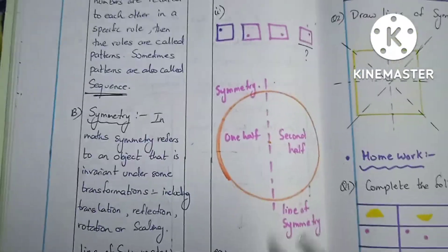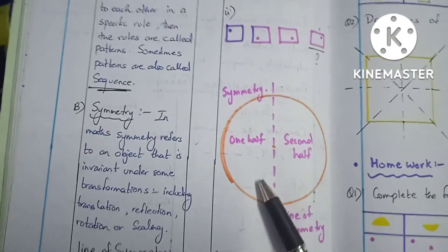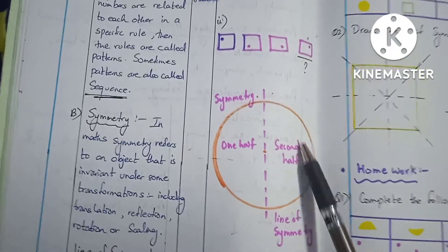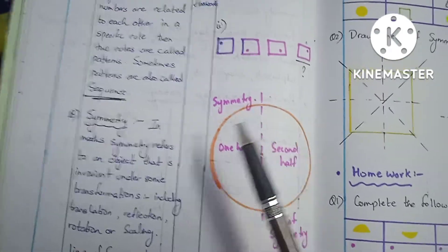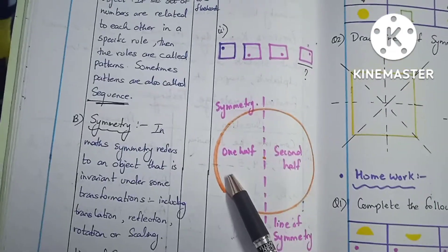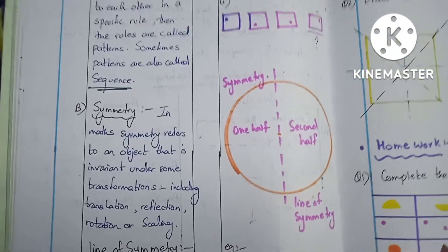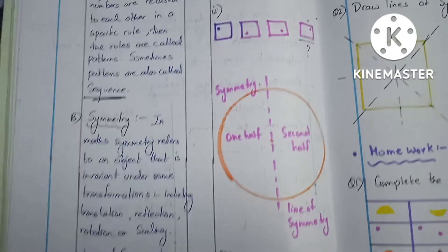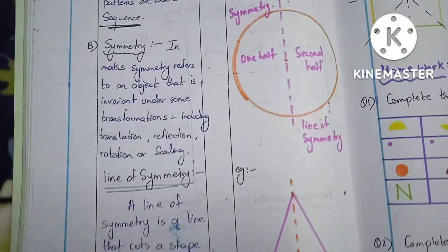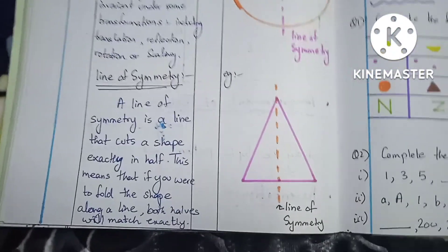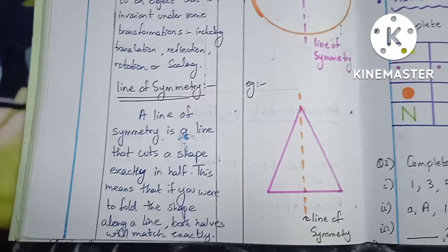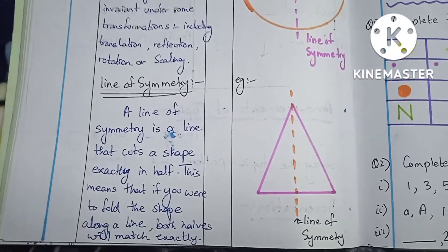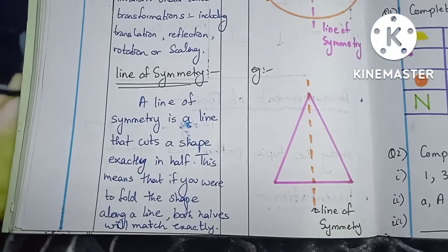This is the line of symmetry. If you fold it, one half will completely lie on the other — or you can say it is the mirror image of the other. The line about which the object is a mirror image is called the line of symmetry.